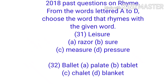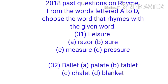Now let's solve a 2019 past question on oral English section 3. From the words A to D, choose the word that rhymes with the given word. Question 31: 'leisure'. Option A: reserve, B: sure, C: measure, D: pressure.